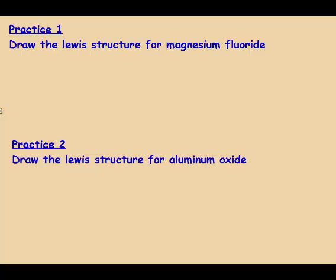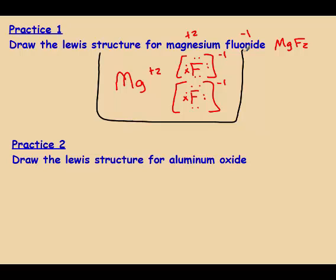Try magnesium fluoride on your own — restart when you're done. The final answer for magnesium fluoride: magnesium should have no dots and a plus two charge, and you should have two fluorines, each with seven dots and one X. It doesn't matter where the X is as long as it's around fluorine, and each fluorine should have a negative one charge.